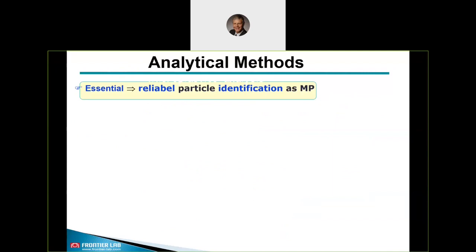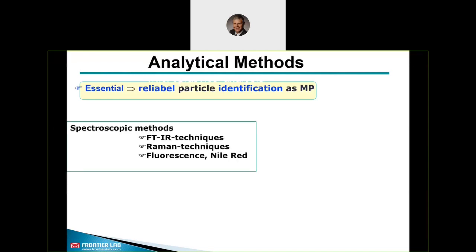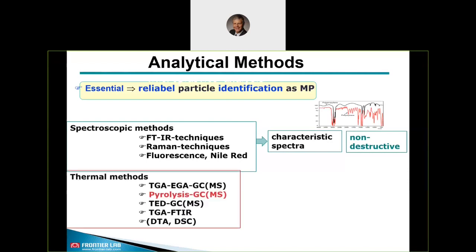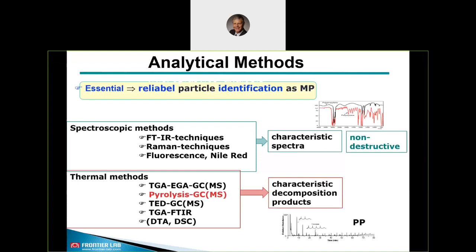What are the available and frequently used analytical methods for microplastic identification? Particle-dependent spectroscopic methods and thermal methods are complementary and provide different information. Spectroscopic methods provide characteristic spectra and are in most cases non-destructive. Thermal methods give characteristic decomposition products and are destructive. I will focus on pyrolysis GCMS with a short comparison to TET GCMS.